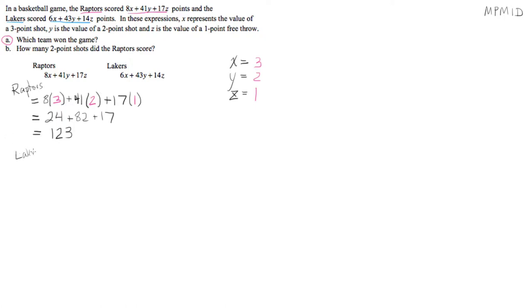And so now let's take a look at the Lakers. Same deal here. We're going to replace three pointers with their value, two pointers with their value, and one pointers with their value. So three, two, one. The Lakers had 18 points from three pointers, 86 points from two pointers, and only 14 points in free throws. When we add 18 and 86 and 14, we get 118.